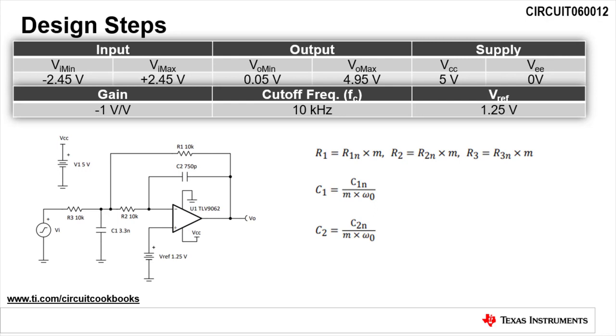M is known as our scaling factor. If we scale R1N, R2N, and R3N by a factor of M, then we will have to scale C1N and C2N by 1 divided by M.